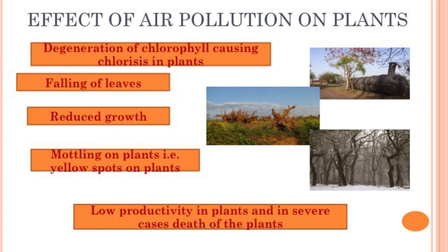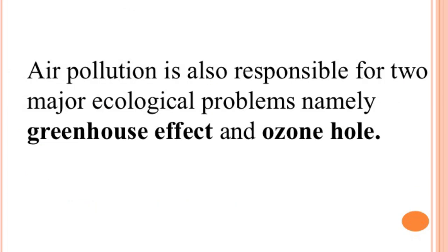Gaseous pollutants not only affect our health — they also harm our plants. Degeneration of chlorophyll causing chlorosis in plants is one of the effects. Falling of leaves, reduced growth, mottling on plants (yellow spots), low productivity, and in severe cases the death of the plant are also effects. Air pollution is also responsible for two major ecological problems: greenhouse effect and ozone hole.